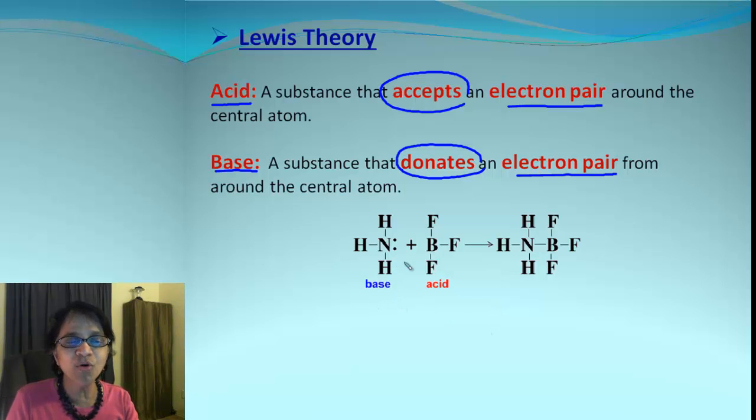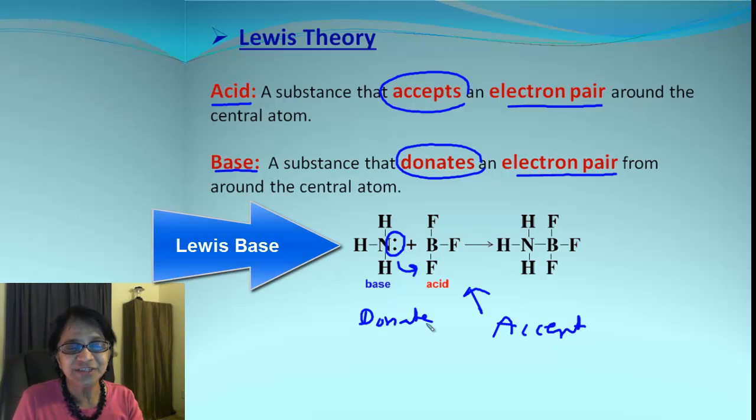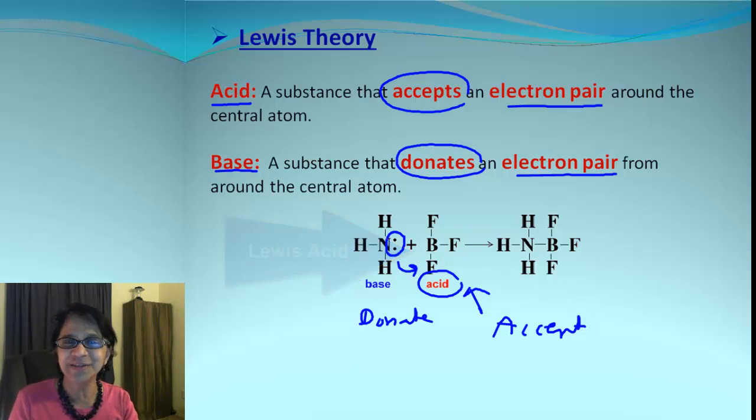So look at this. We have ammonia and boron trifluoride as two substances here. With Lewis dot structure, we can clearly find that ammonia has an unshared pair of electrons, so ammonia can actually donate electrons and boron trifluoride is going to accept the electron. So the one which donates the electron is a base and the one which accepts is called an acid. So look at that - we were easily able to identify acids and bases using all three different theories.